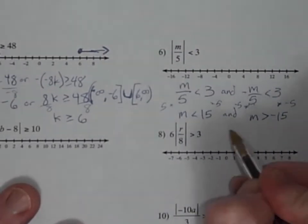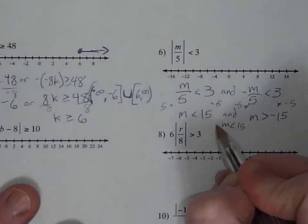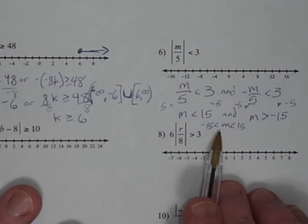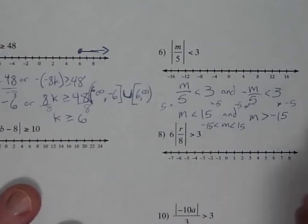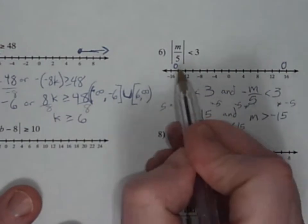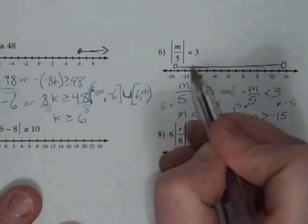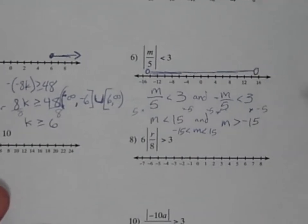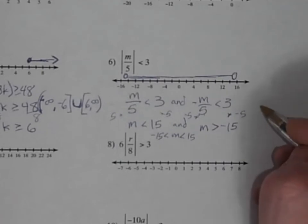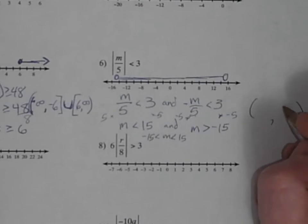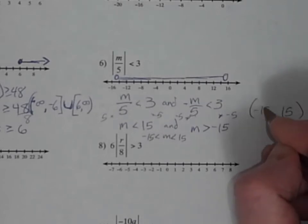Sometimes you'll see it written with m in the middle, between 15 and negative 15. There's the solution. With no equal to, it's going to be open circles on 15 and negative 15, and graph everything in between. There's the solution, the graph, and the interval notation. It does not include either number on the end.